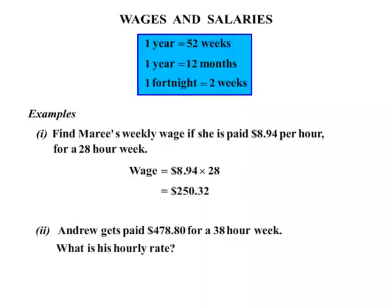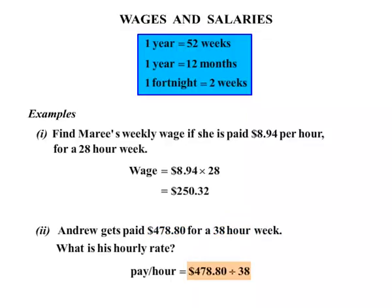The second question: Andrew gets paid $478.80 for a 38-hour week. What is his hourly rate? The hourly rate simply means how much pay is he getting per hour. So if he's getting $478.80 for the week and working 38 hours, this time we divide — $478.80 divided by 38 — and we get $12.60 per hour.